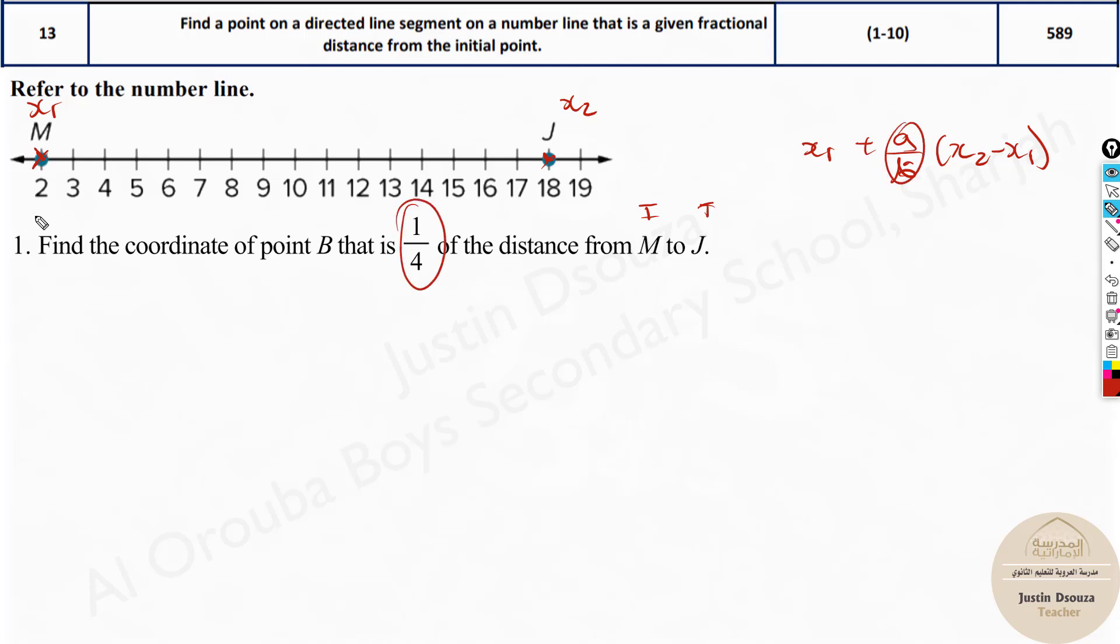Let's just substitute: 2 is x₁, 2 plus one-fourth, x₂ is 18 minus 2. Now solve it up, you will get 16 here, 4 times 2 plus 4 is 6, and that is the answer. So if you want one-fourth the total distance you should choose point number 6. This is one-fourth the total distance of M to J.